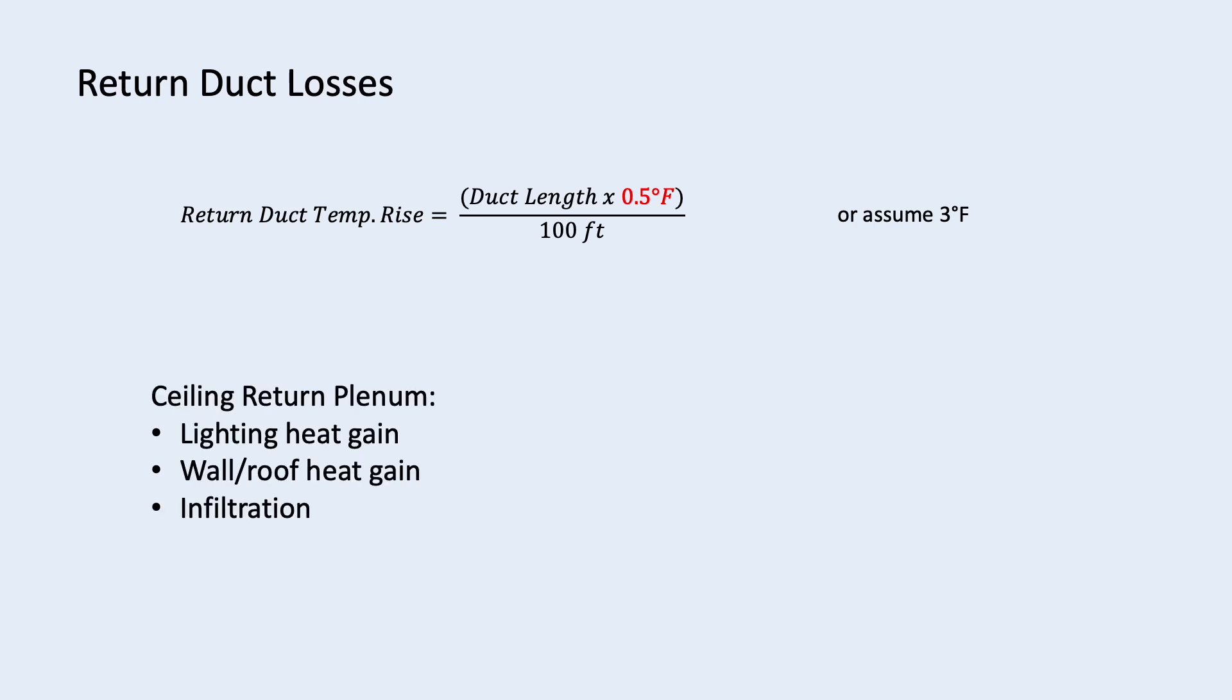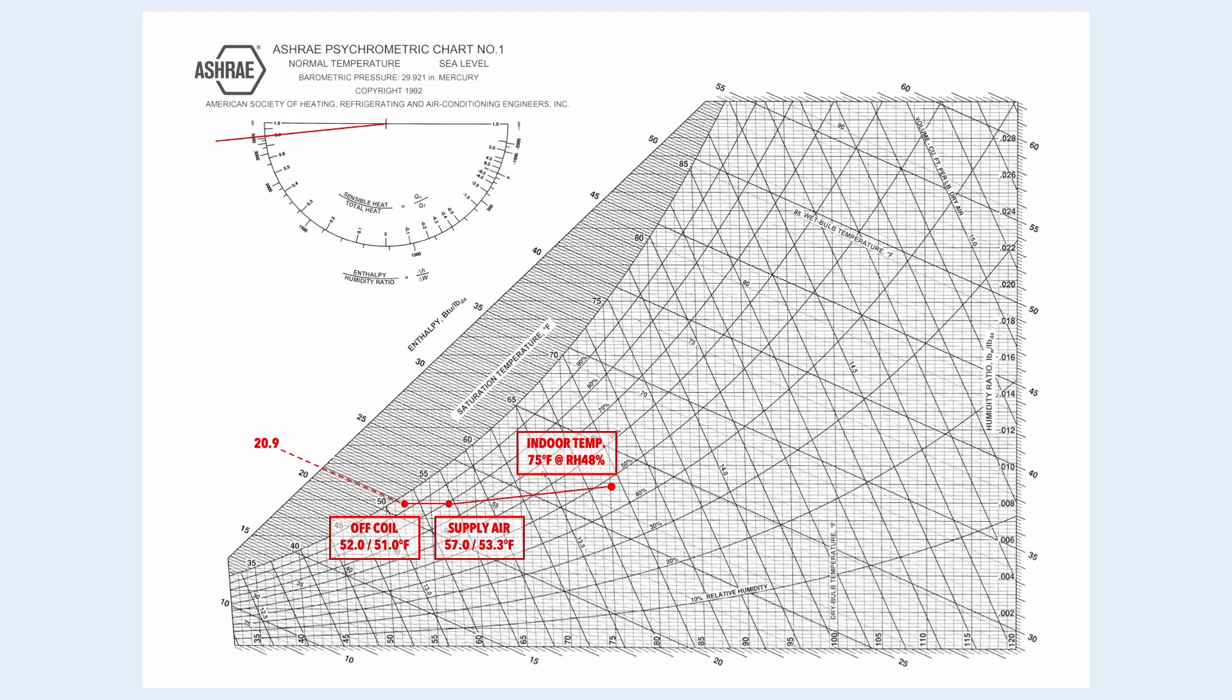However, if you are using space above ceiling as the return plenum, you need to account for the heat gain due to lighting, wall, roof, infiltration, and other possible sources. So, we bring up the psychrometric chart again and we mark the return air temperature as 3 degree Fahrenheit above the indoor temperature.